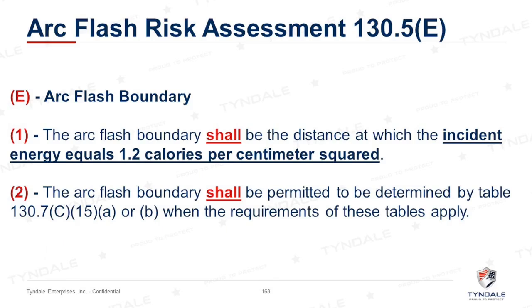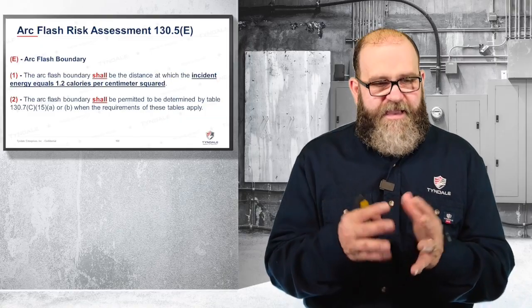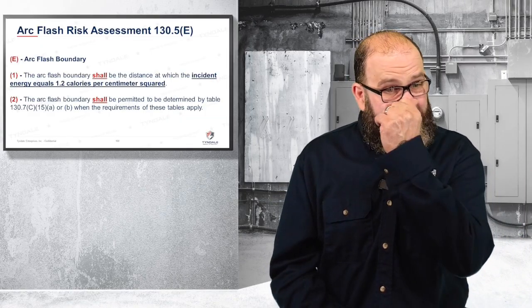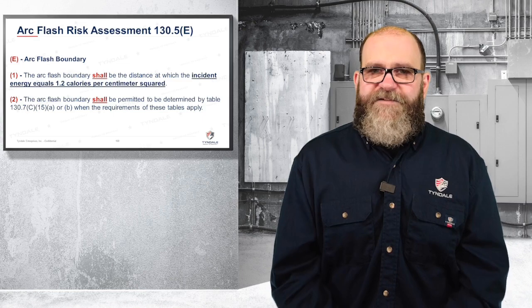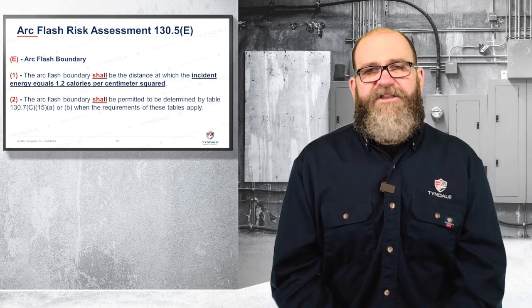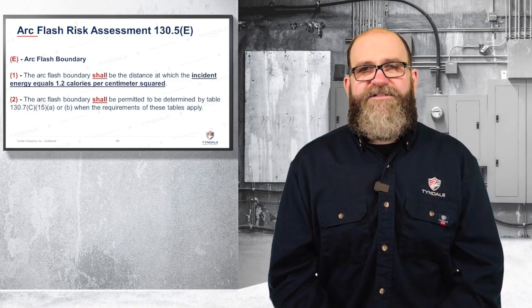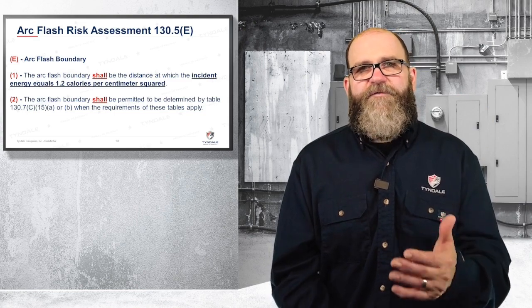Then we get to E, 130.5E, and this talks about the arc flash boundary. The arc flash boundary shall be the distance in which you get a second degree burn. It says the incident energy equals 1.2 calories per centimeter squared. I can't tell you how many times I've heard out in the field, 'Hey, we've got our arc flash boundary set up, and as long as you don't cross that, you're safe.' Well, that's a fallacy. Here's what it says: that you can get those exact burns if you're standing at the arc flash barricade.